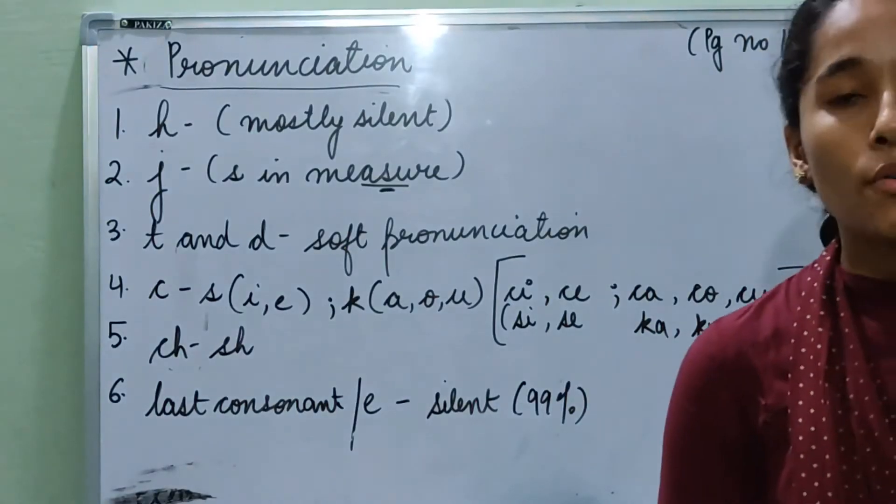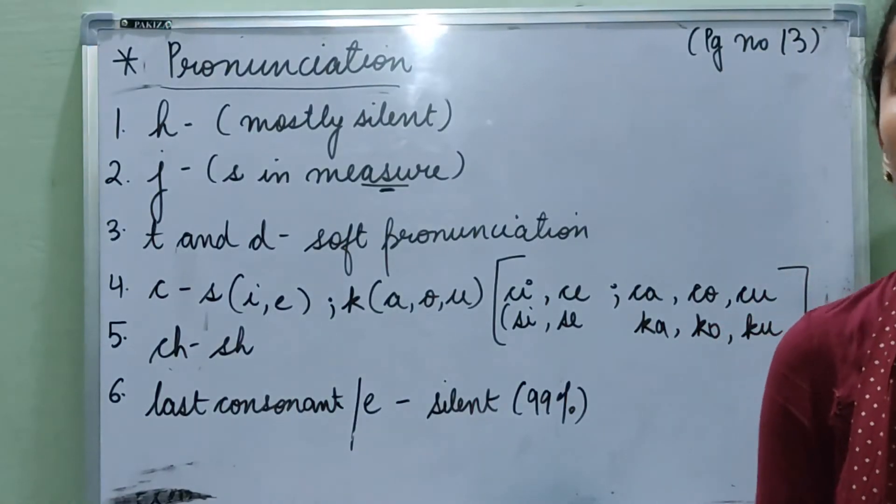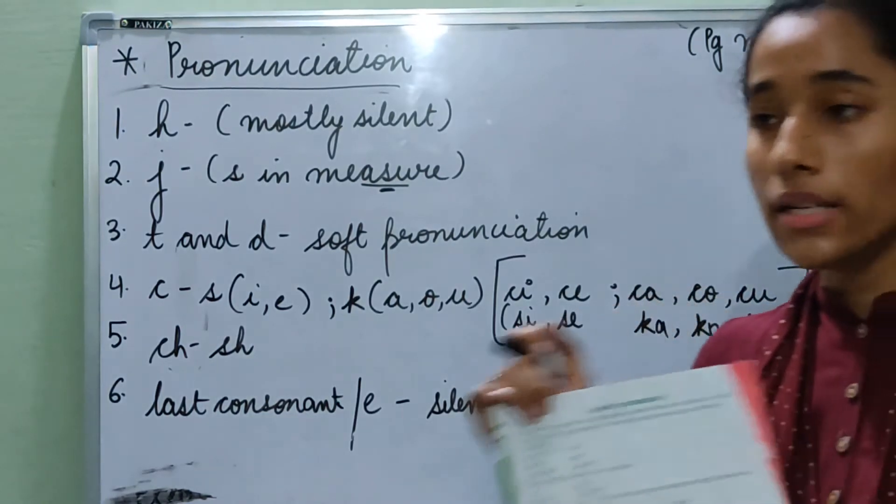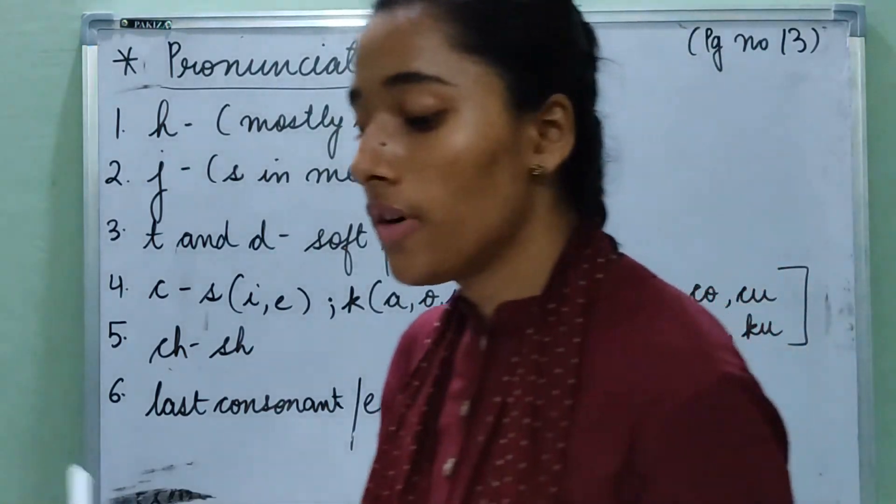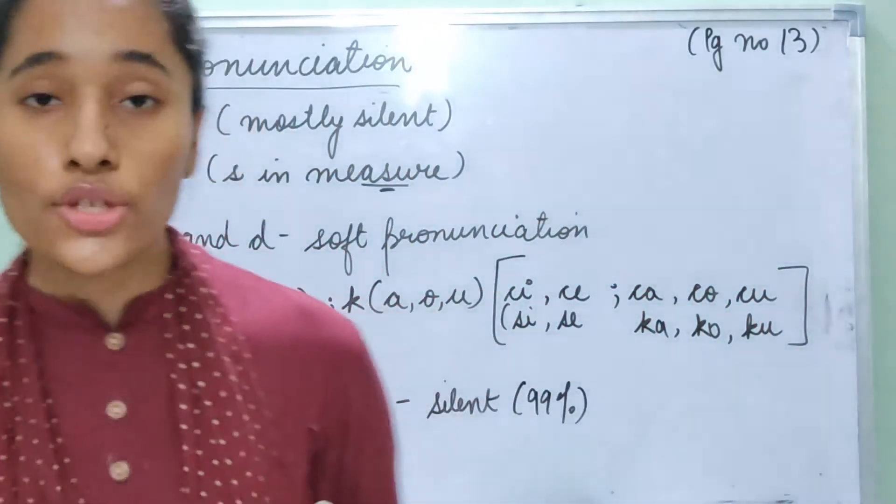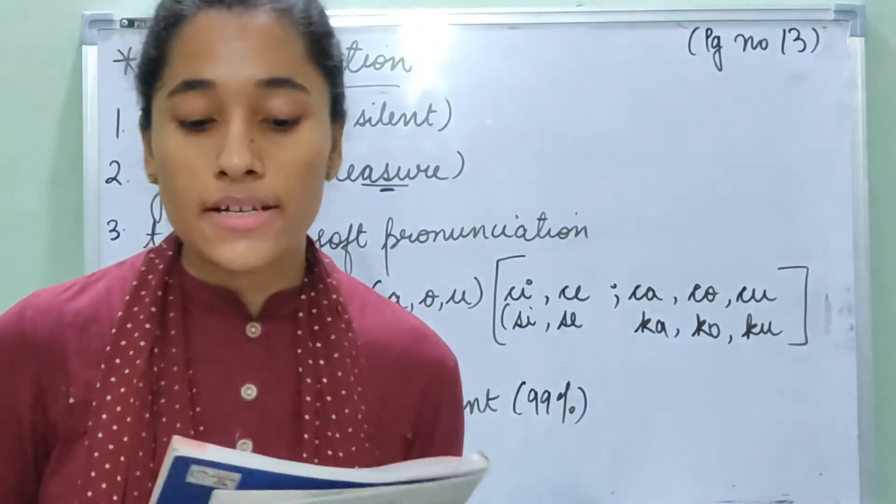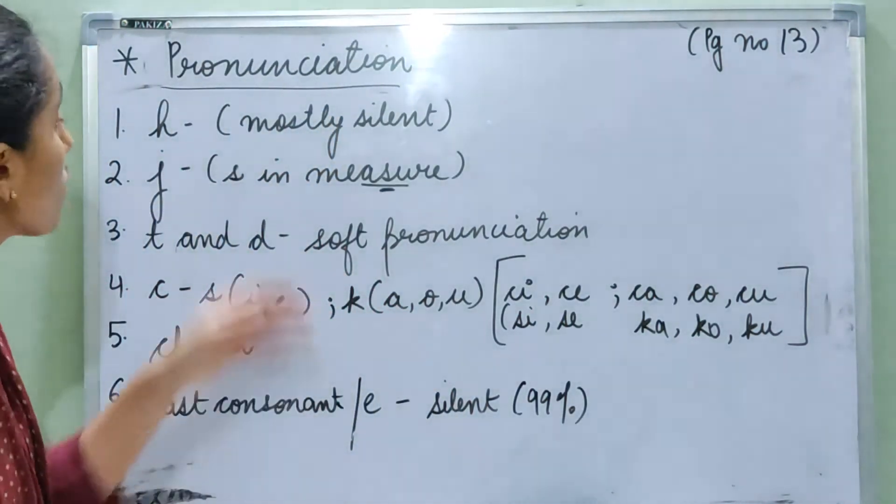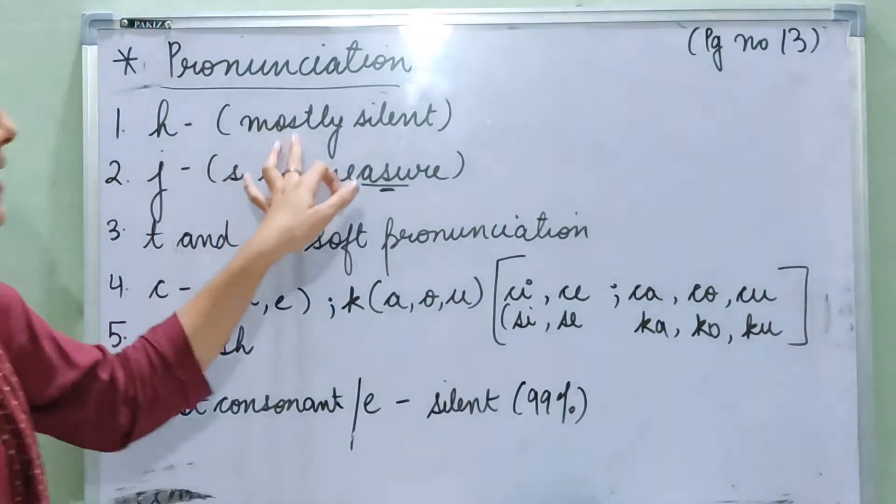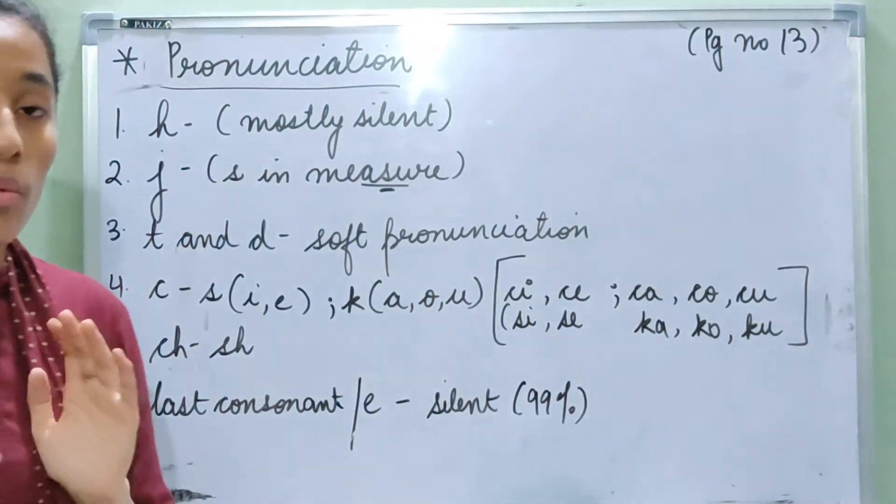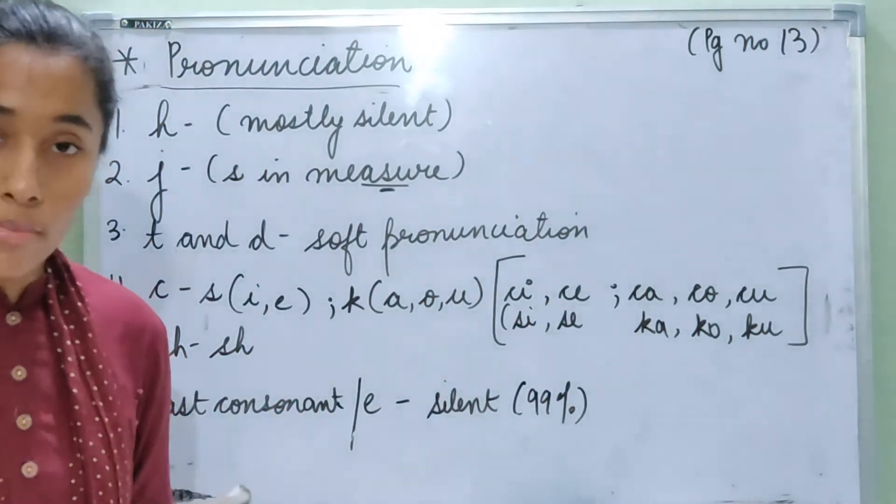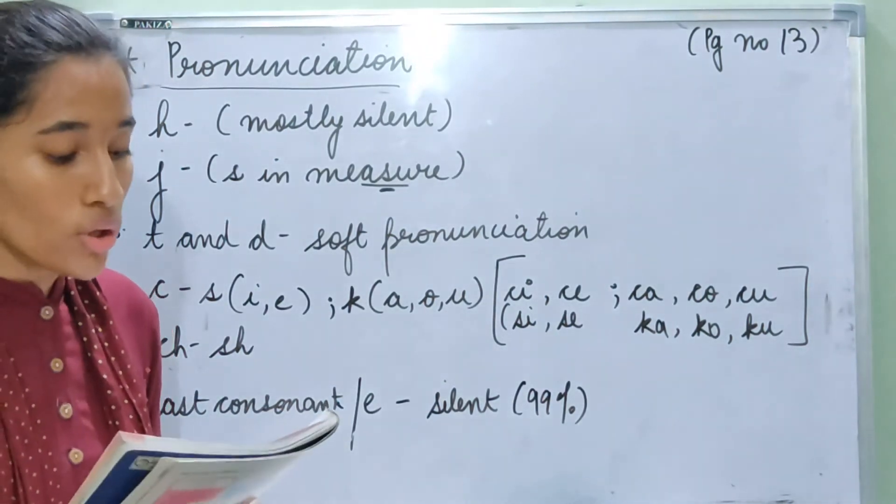Now we are going to learn about pronunciations in French and how to pronounce different words. As it is given on page number 13, a guide to pronunciation. The first one is in French the letter H is mostly silent. As a letter it has a sound, but in words it is usually not pronounced. So H is usually treated as silent when we pronounce it in a word. In French we call it ash. For example, homme, man, hotel, hotel, horloge, wall clock.